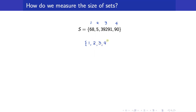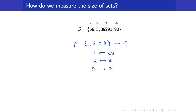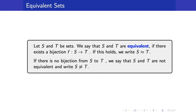We are creating a bijection from the set {1, 2, 3, 4} to this set S. So what's happening is that we are mapping 1 to 68, 2 to 5 — the function F maps 1 to 68 and so on. So here is now the definition of equivalent sets.